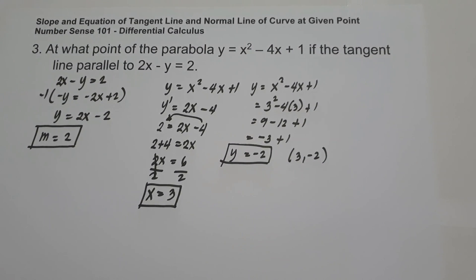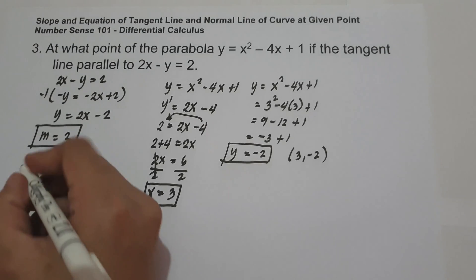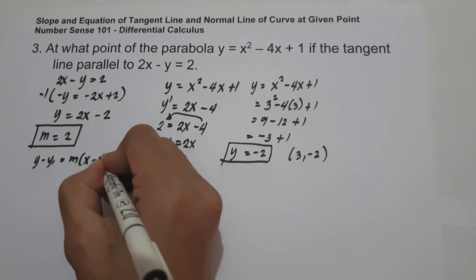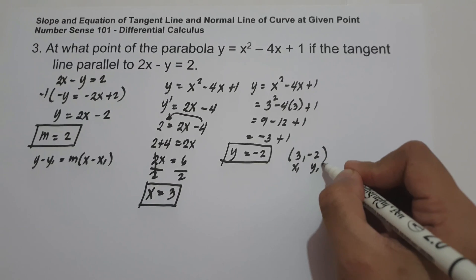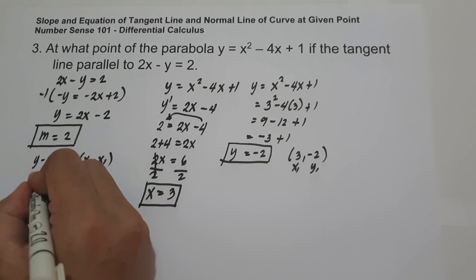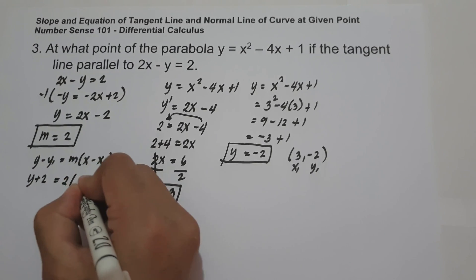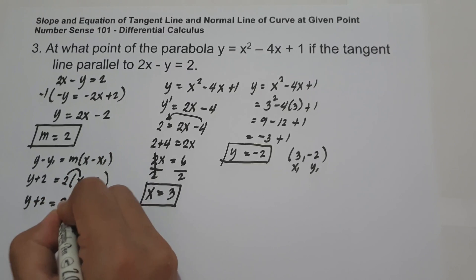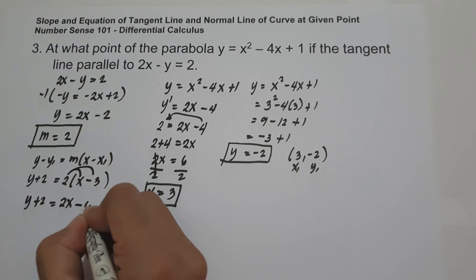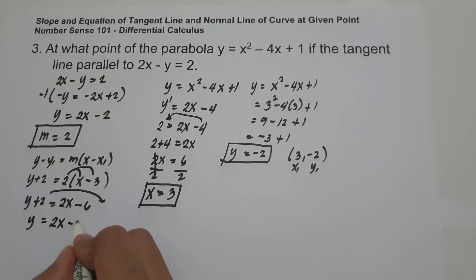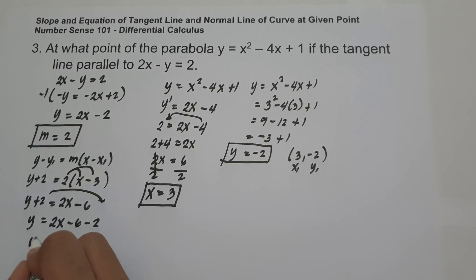To find the equation of the tangent line using point (3, -2) and slope 2: y minus (-2) equals 2 times x minus 3, so y plus 2 equals 2x minus 6. Moving 2 to the other side gives y equals 2x minus 8. That is the equation of the tangent line.